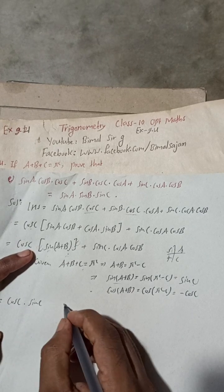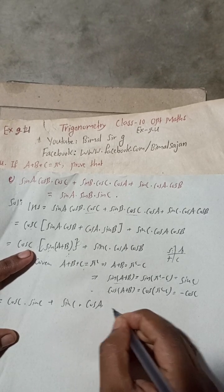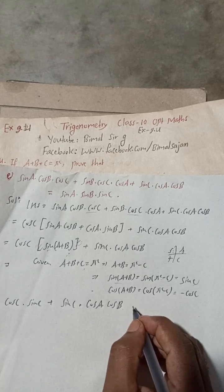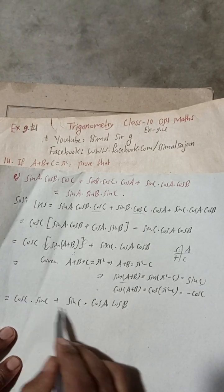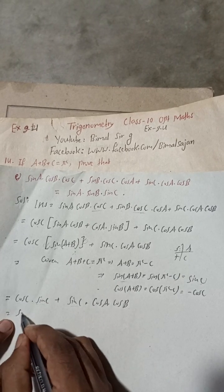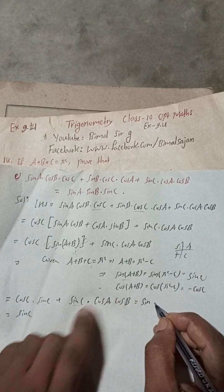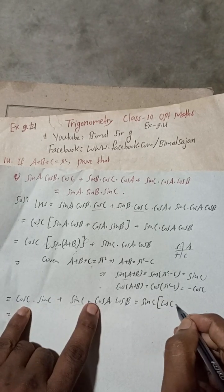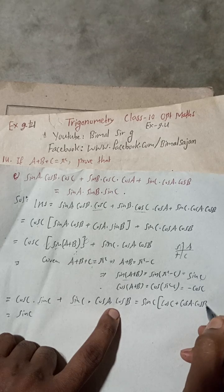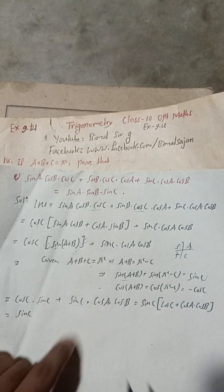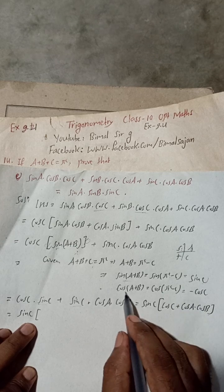Now substituting, we get: cos C times sine C, plus sine C times cos A cos B. Both terms have sine C, so take sine C as common. Remaining inside the bracket is cos C plus cos A cos B.